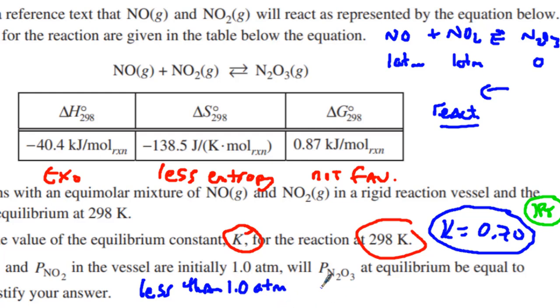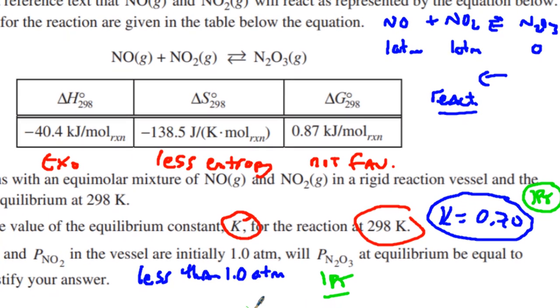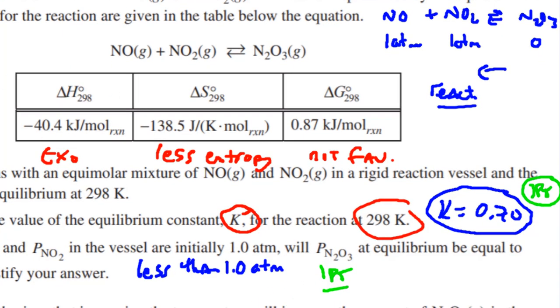This means that the N2O3 is going to be less than 1.0 atmospheres. You get one point for a correct justification that the K indicates a substantial amount of reactants will be present at equilibrium. You have to discuss that the reactants are favored, which means it's not going to equal 1.0. You get that other point.